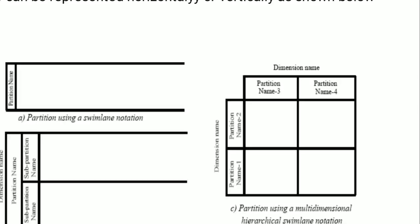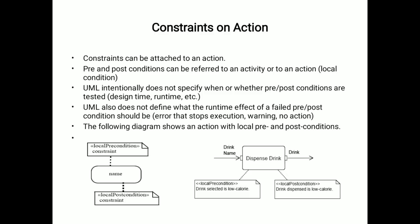Next is constraint and action. Constraints can be attached to an action. Pre- and post-conditions can be referred to an activity or to an action. UML intentionally does not specify when or whether pre-/post-condition is tested. UML also does not define what the runtime effect of a failed pre- or post-condition should be. The following diagram shows an action with local pre- and post-conditions.